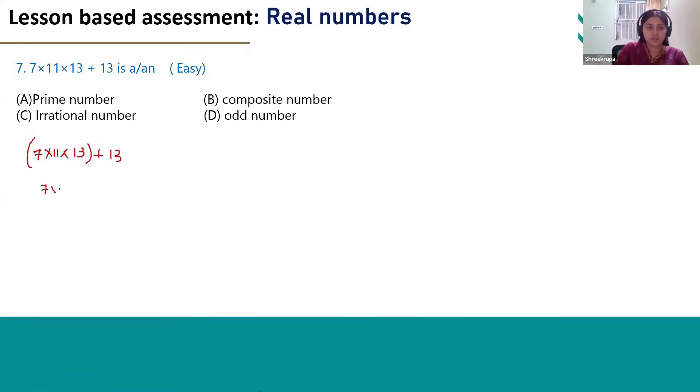7 x 11 we will get 77. 77 x 13. 7 x 3s are 21. 7 x 3s are 21 plus 2. 23 plus 77 ones are 77.